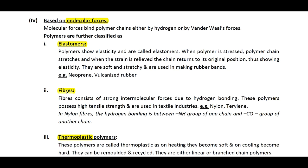Fibers consist of strong intermolecular forces due to hydrogen bonding. These polymers possess high tensile strength because of strong forces of attraction and are commonly used in textile industries. Examples include nylon and terylene. In nylon fibers, the hydrogen bonding is between the NH group of one chain and the CO group of another chain — we will study this in the nylon structure.